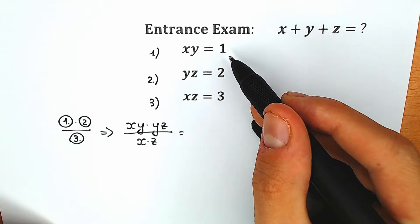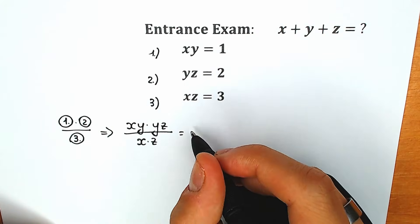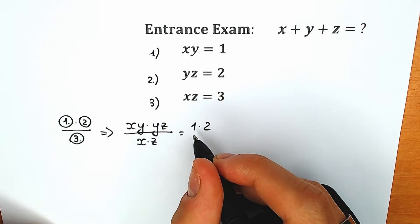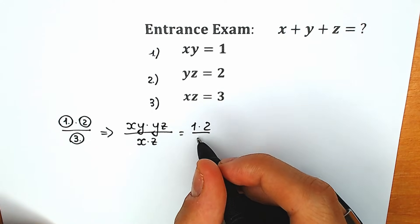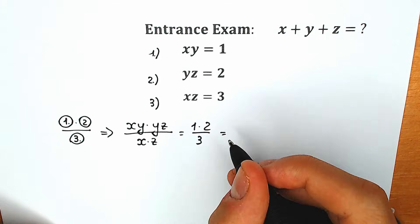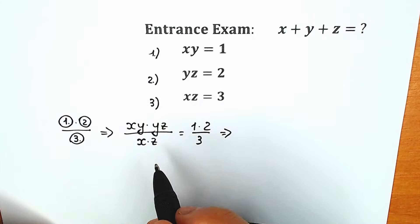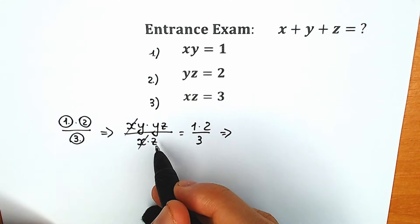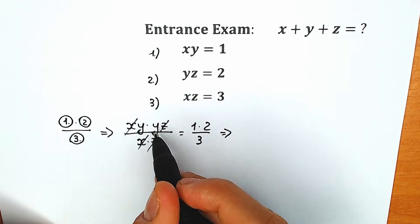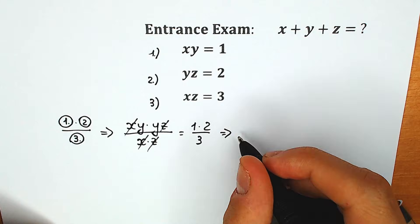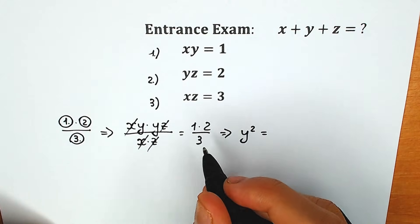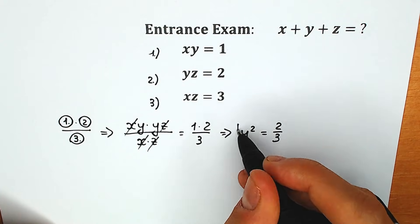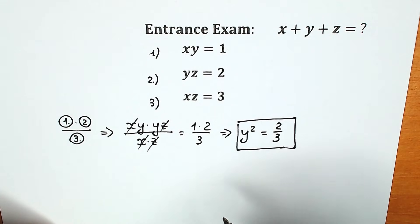If we're talking about the constants: xy equals 1, times yz equals 2, and we divide it by x times z equals 3. On the right side we get 2/3. On the left side, we can cancel x, x and z, z, and as a result we have only y times y — y squared. So y squared equals 2/3.